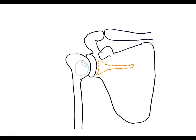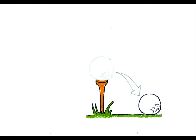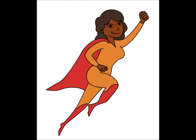The glenohumeral joint of the shoulder is designed to offer an incredibly diverse range of motion. It's a shallow ball and socket joint that looks like a golf ball on a tee. But think of how easy it is to knock a ball off its tee. In the same way, the bony architecture is inherently unstable and prone to dislocation. It tries to overcome this by using soft tissue, i.e. ligaments and surrounding muscles as stabilizers.